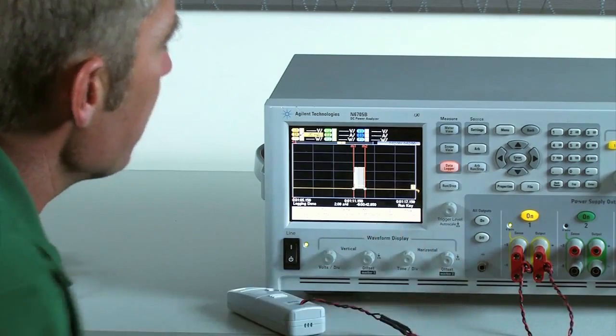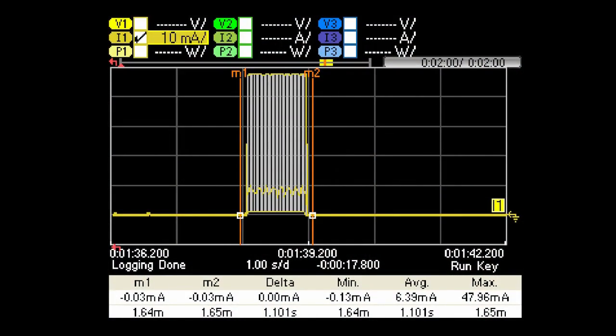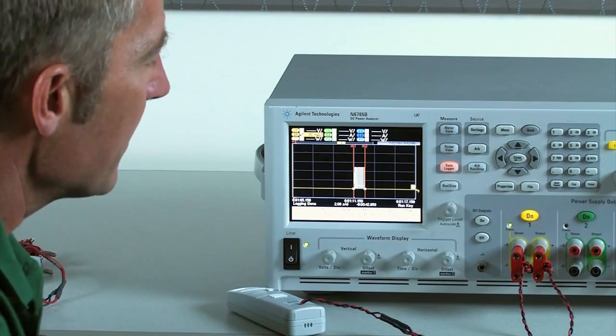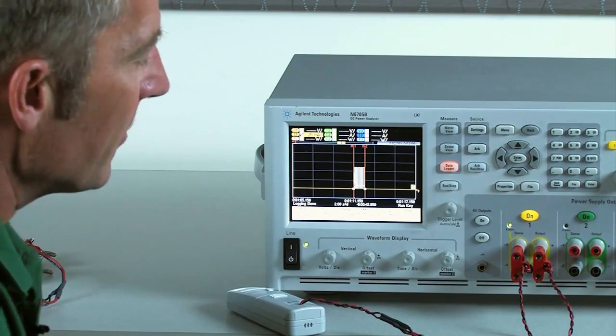So using this information we're able to create devices that use less current. I'd like to go ahead and switch our temperature sensor and use the same setup to take a look at its current profile.